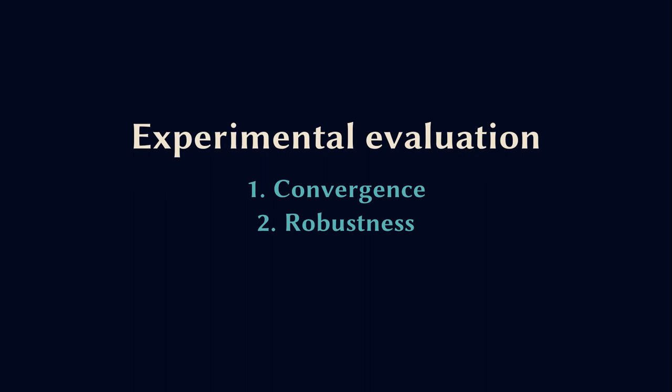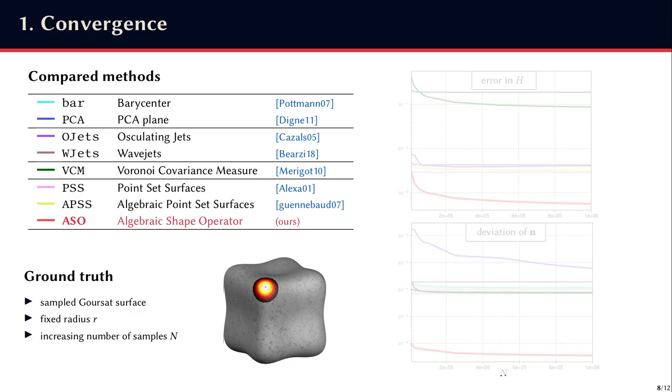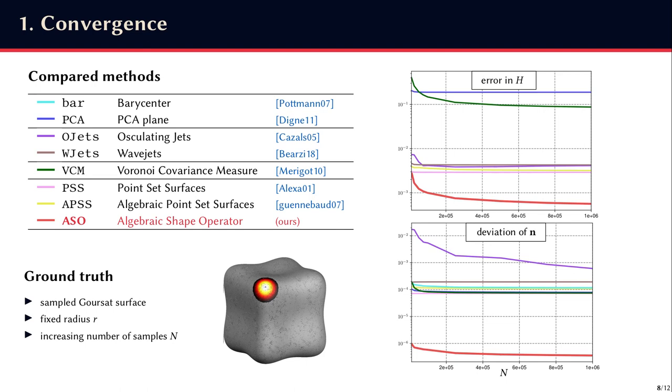Now I will present some results on experimental evaluations of the convergence and robustness of our estimators. So we first perform the convergence test with several other methods summarized in this table, and we use this sampled analytical surface that defines the ground truth for the comparison. Here we test the estimators when the number of points N increases, like if we were approaching a perfect situation where the point cloud is infinitely dense, like a smooth surface.